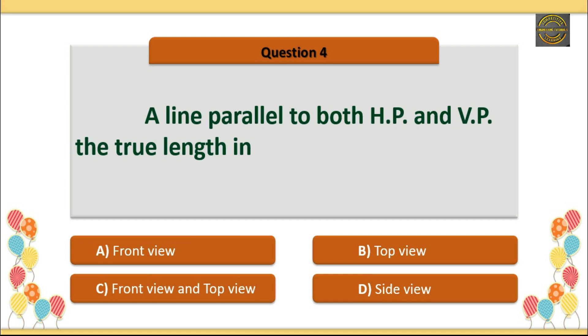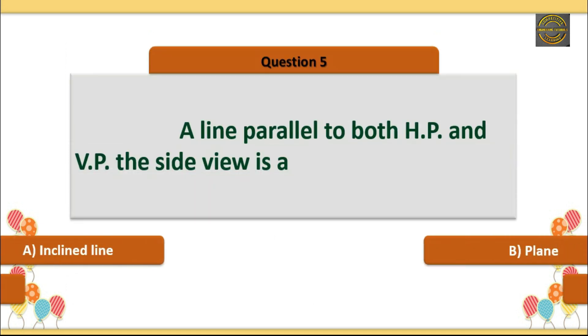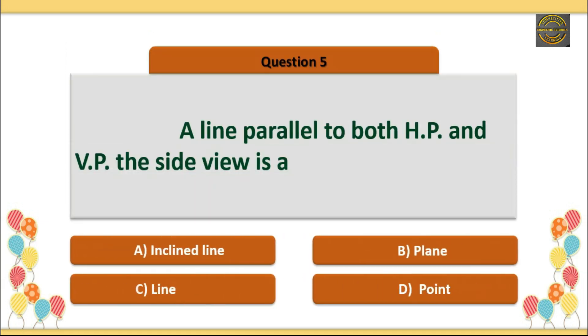Question 4: A line parallel to both HP and VP, the front and top view. Question 5: A line parallel to both HP and VP, the side view is a? Option D is correct: Point.